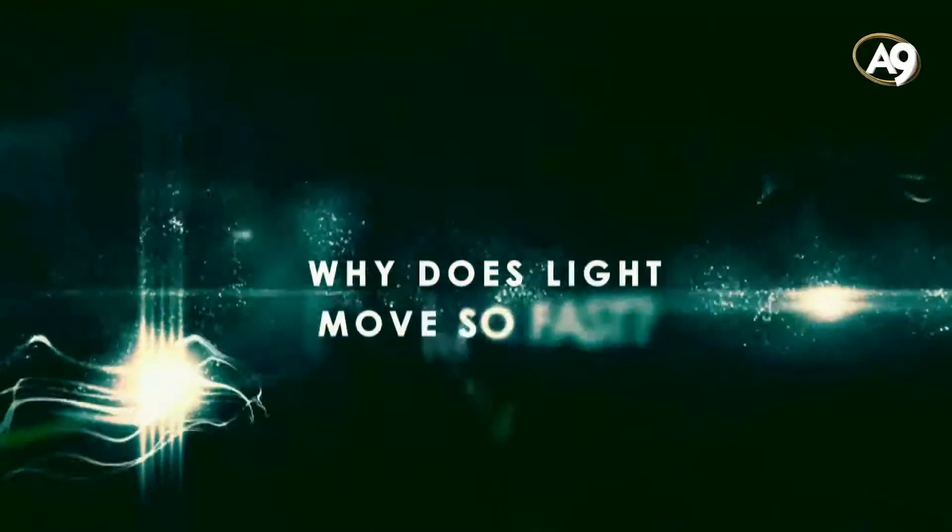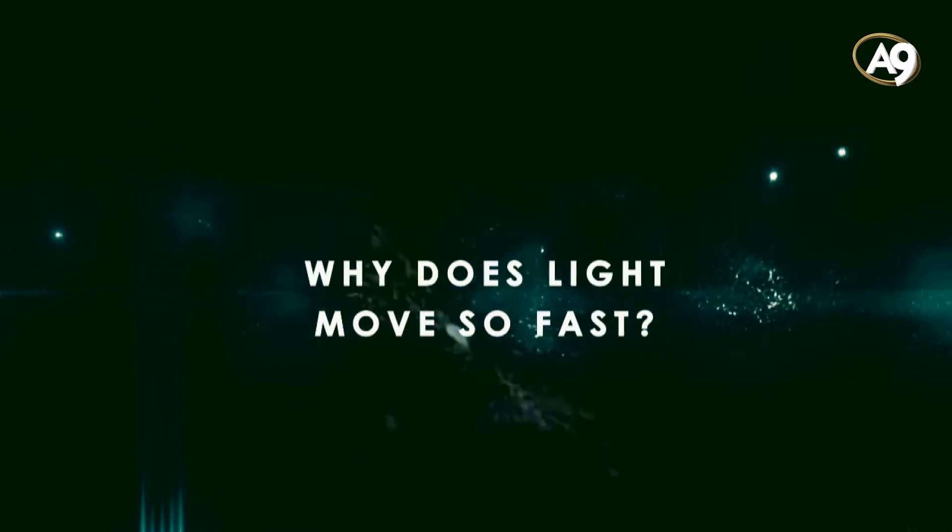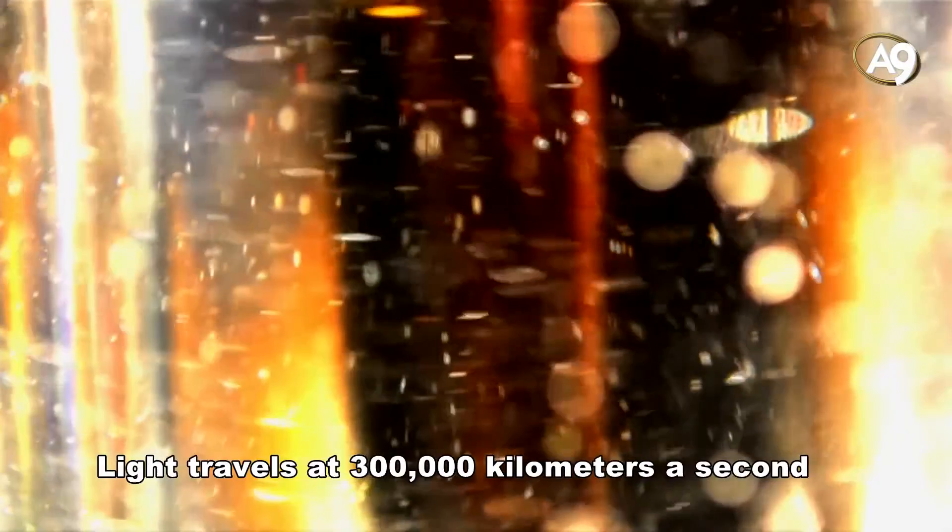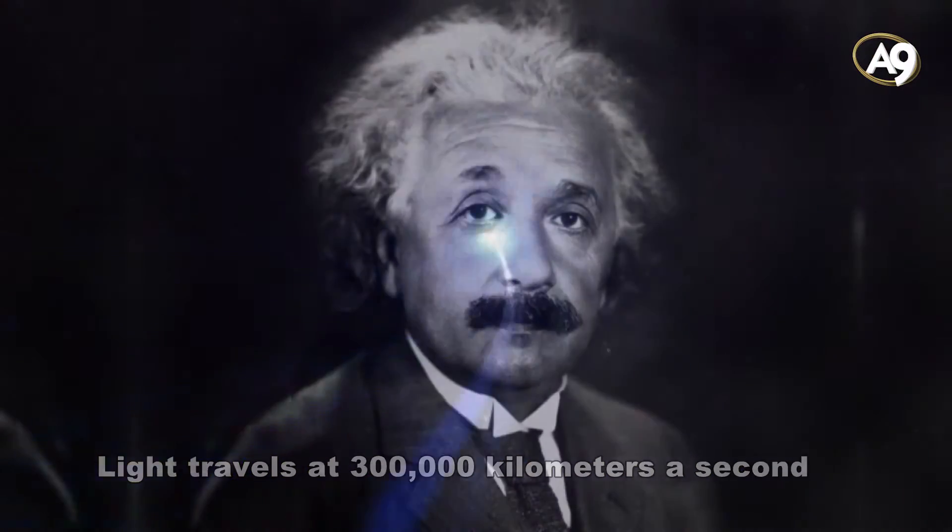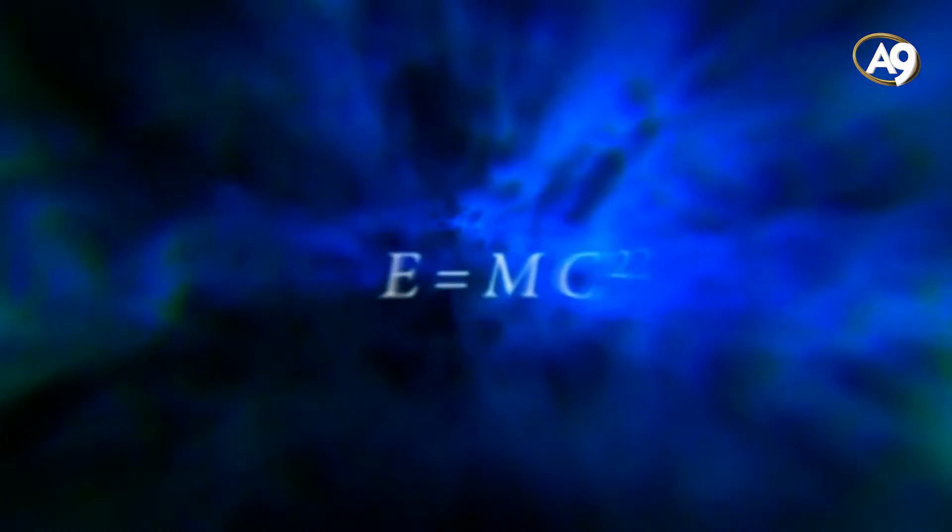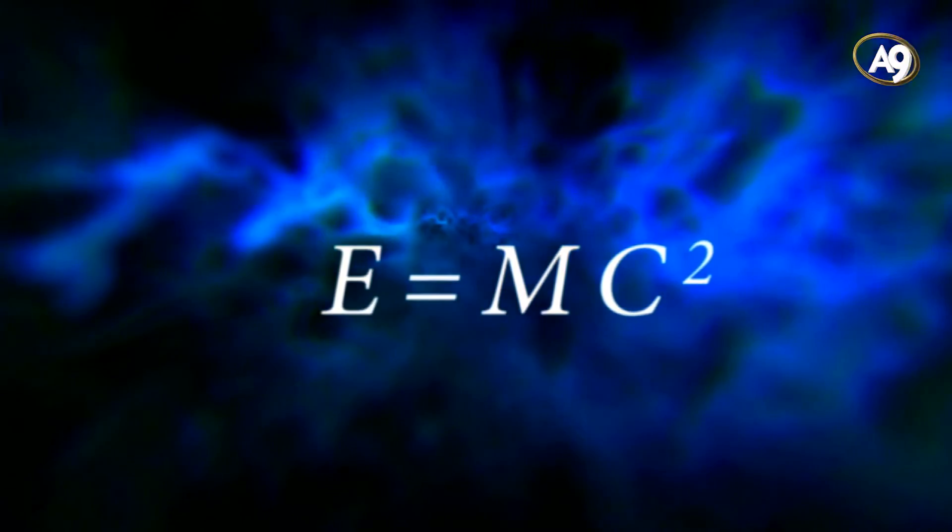Why does light move so fast? Light travels at 300,000 kilometers a second. This is a constant represented by the c in Einstein's famous formula, E equals MC squared.